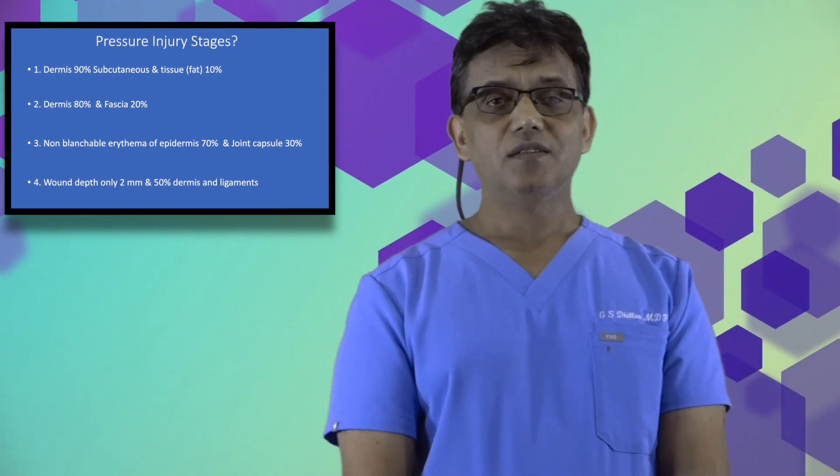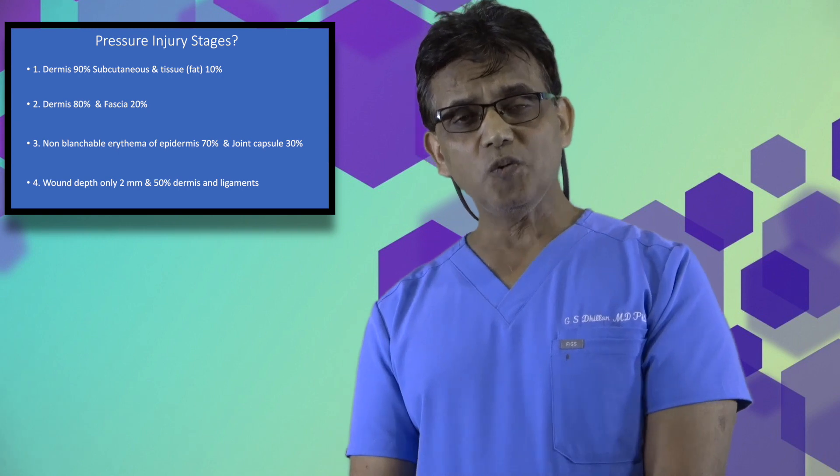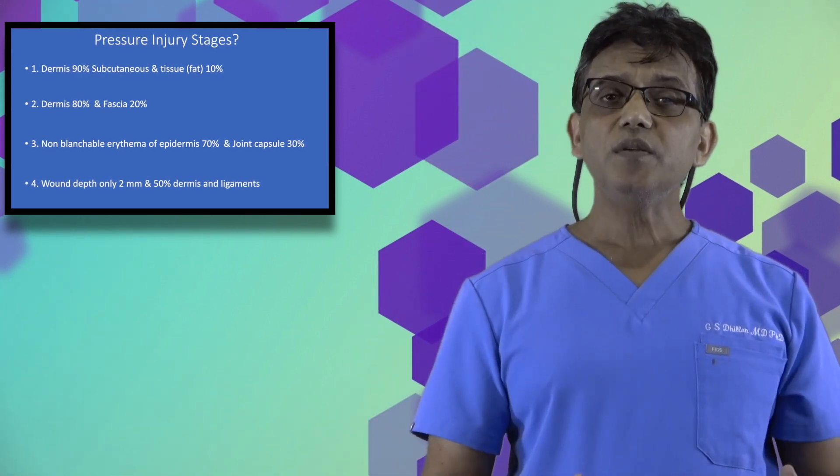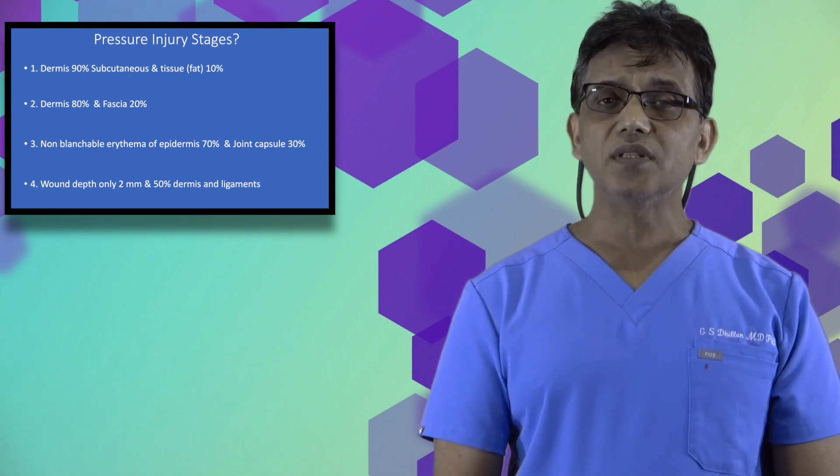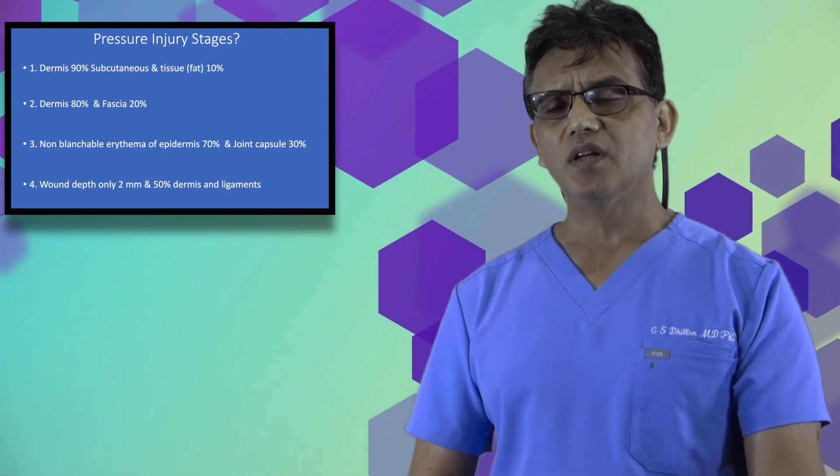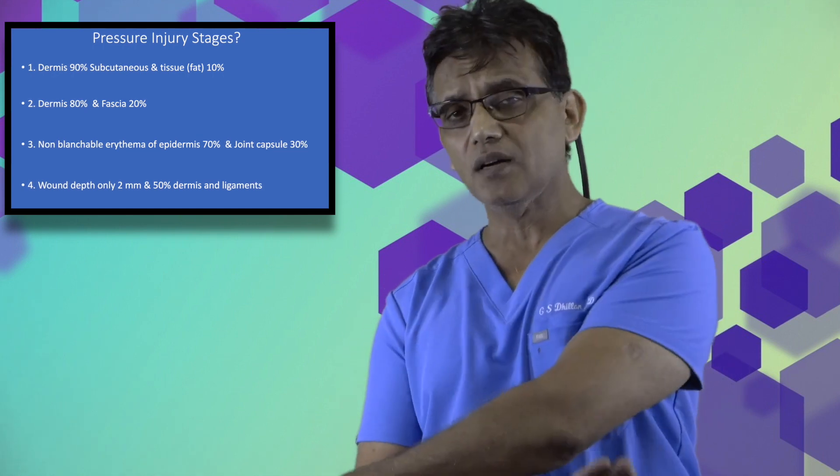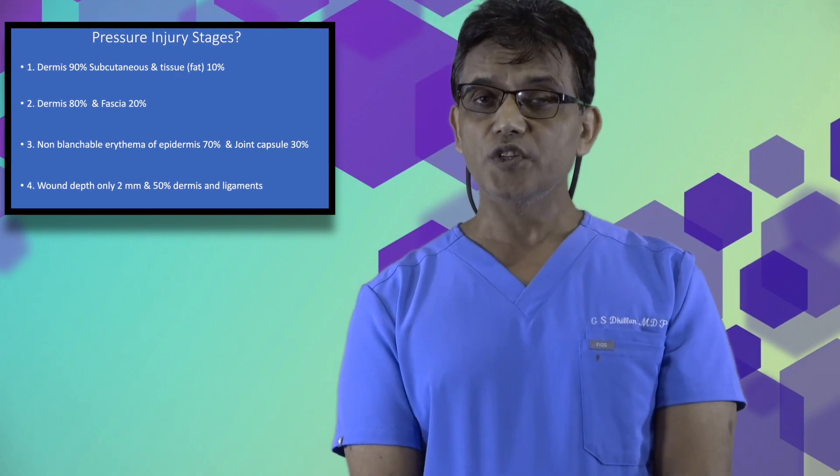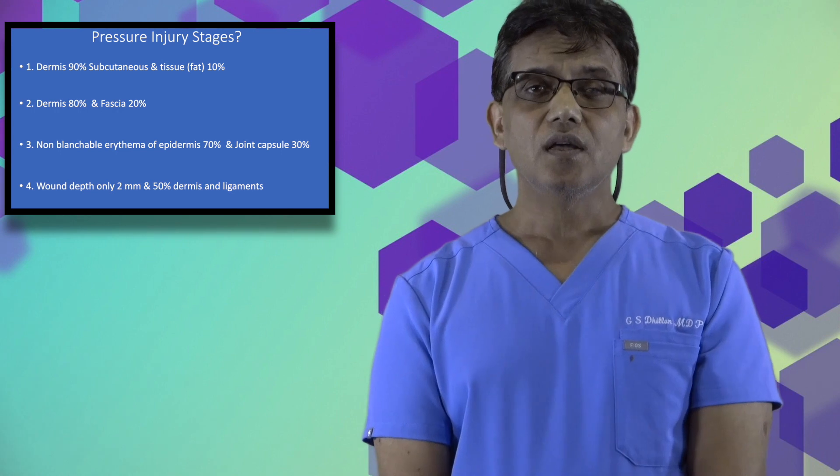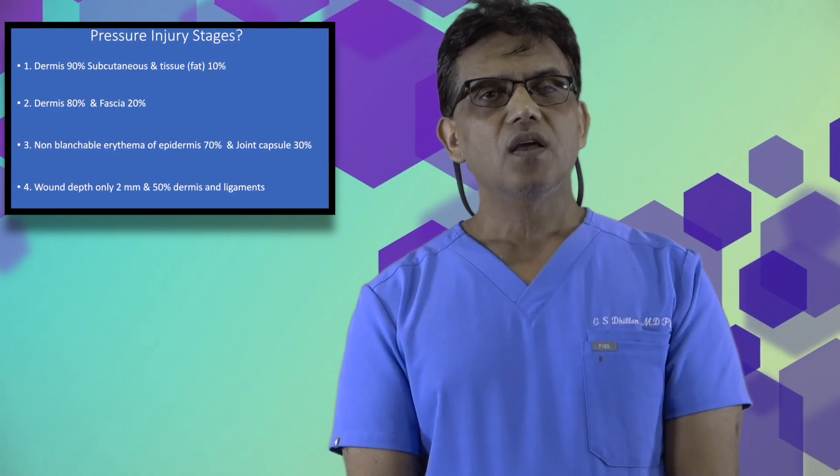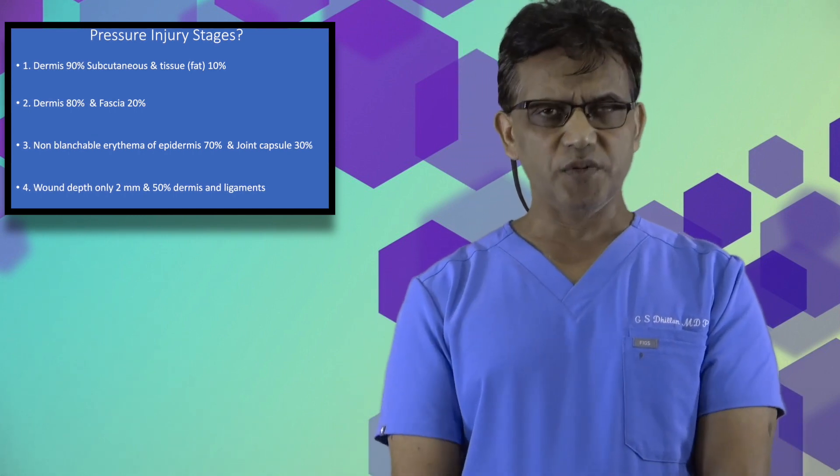Our last candidate, ulcer 4, is only 0.2 cm deep. That's 2 mm deep. The location is the extensor surface of the elbow, back of the elbow, only 2 mm deep. The tissue components are 50% dermis and 50% ligaments.